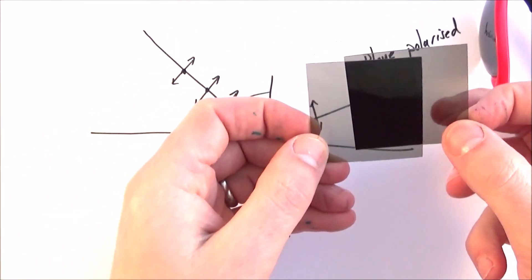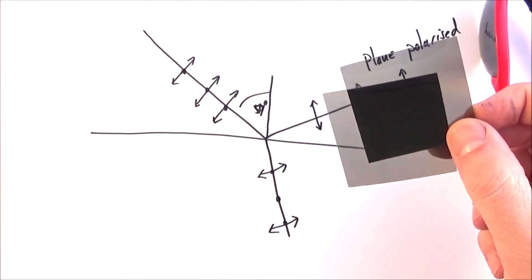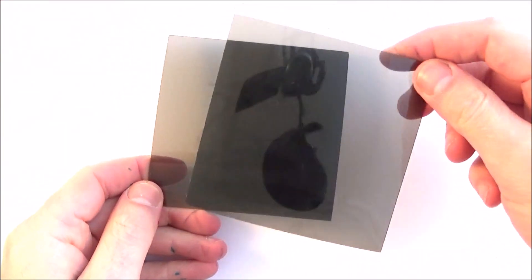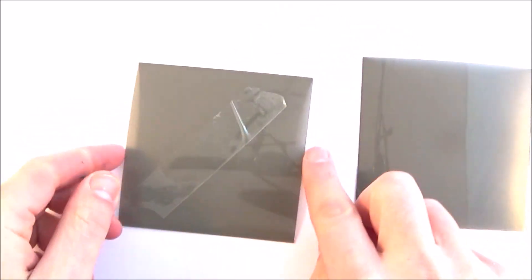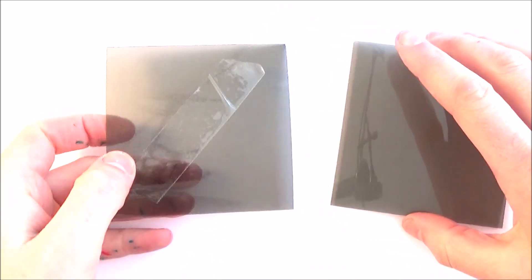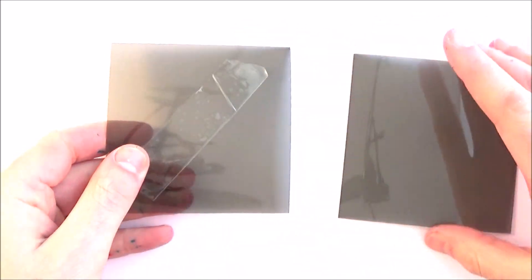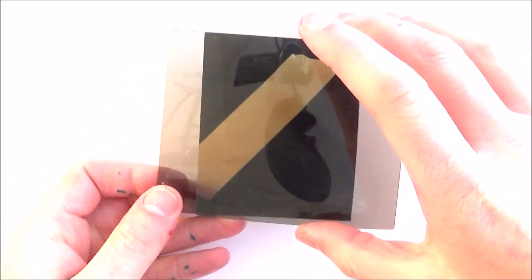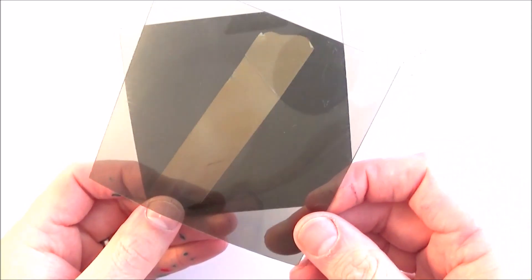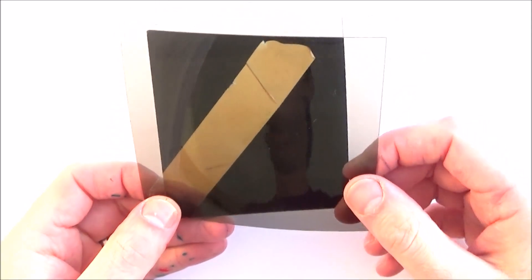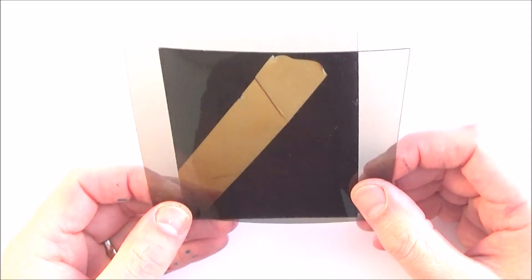A final example: if we have two polaroid filters at 90 degrees to one another and put a piece of tape between them—or in real life, a model of an engineering component like part of a hook or bridge—we can actually look at stresses in that material. This is a really useful way of analyzing shapes through stress analysis.